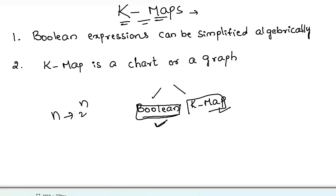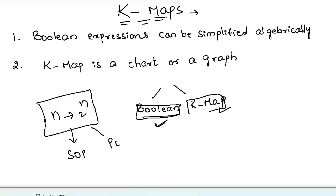These 2-power-n possible combinations come in two ways. The first way is Sum of Products (SOP) form and the second way is Product of Sums (POS) form. In the Sum of Products form, all the variables are in product form, and between the product terms there is an OR operation.